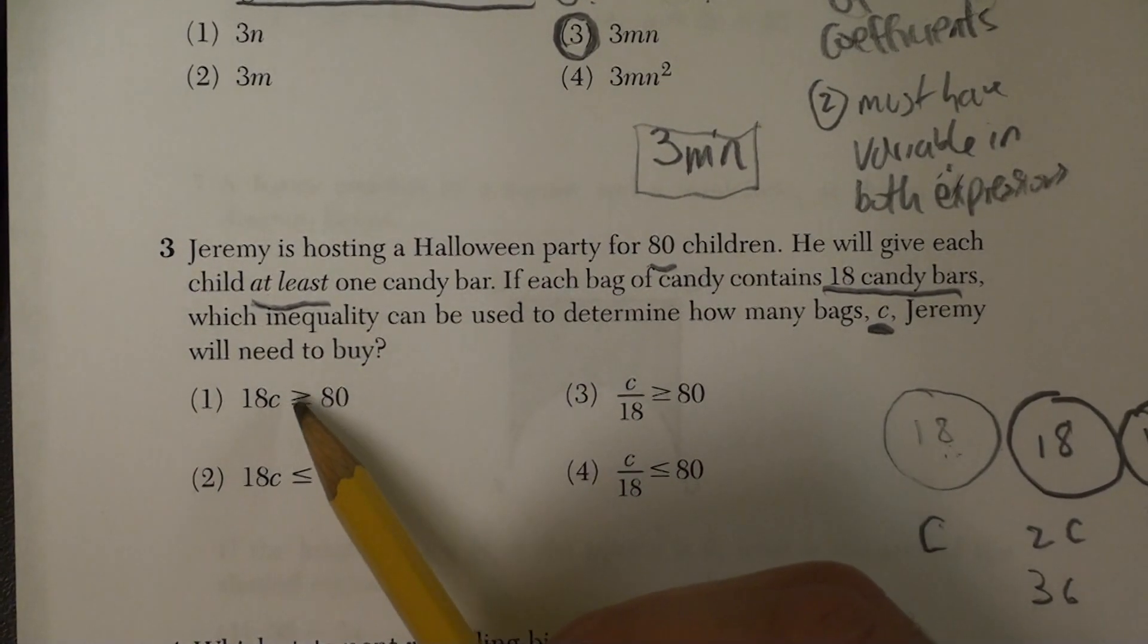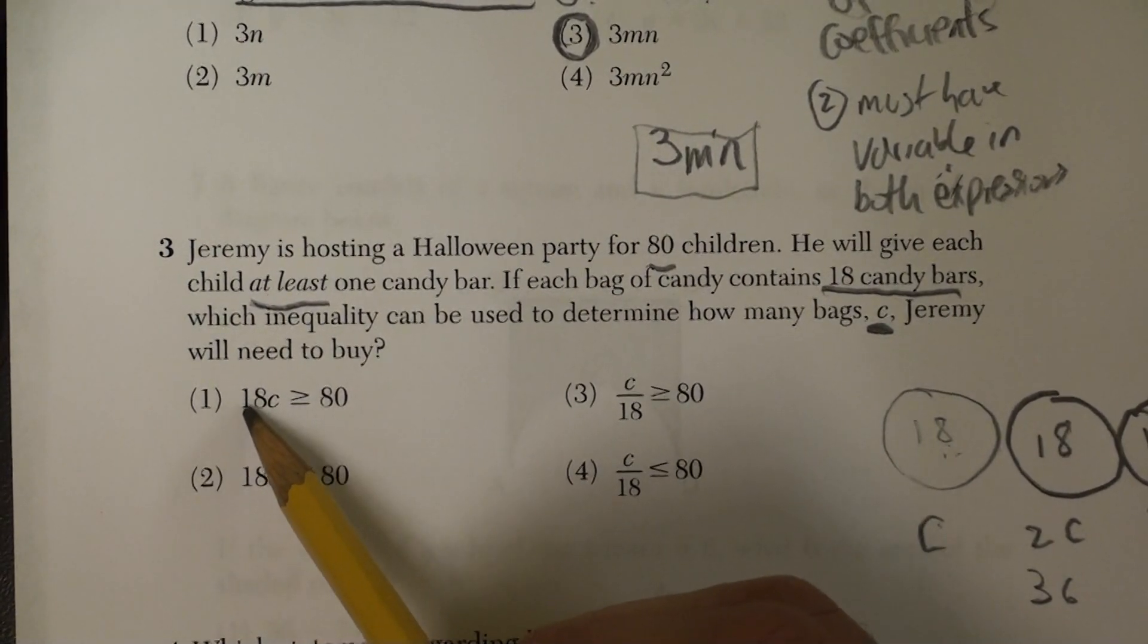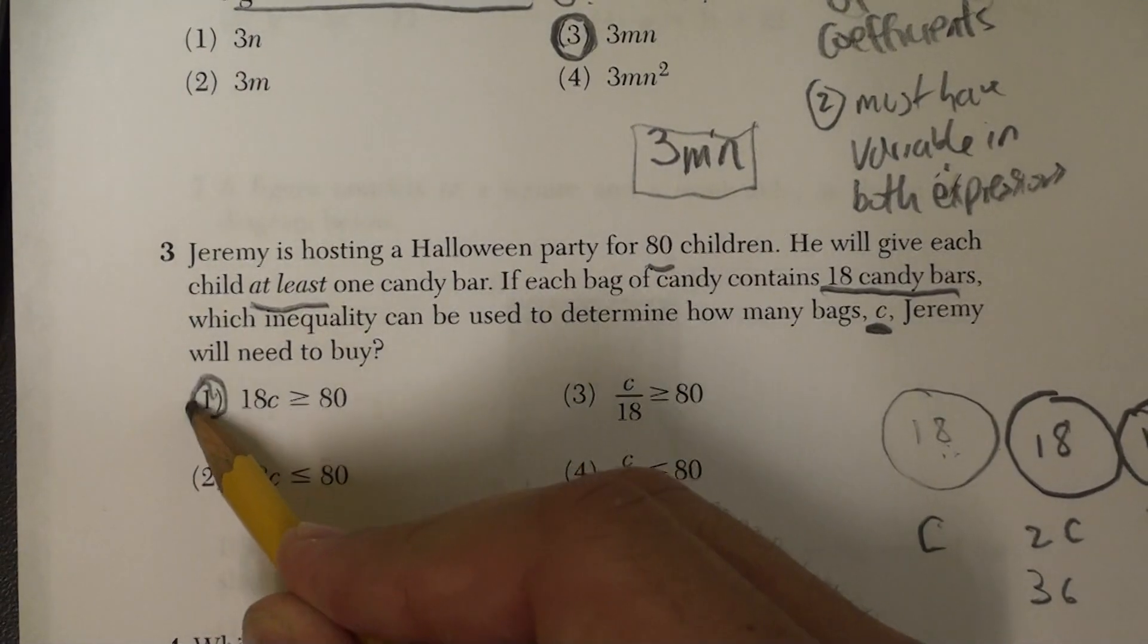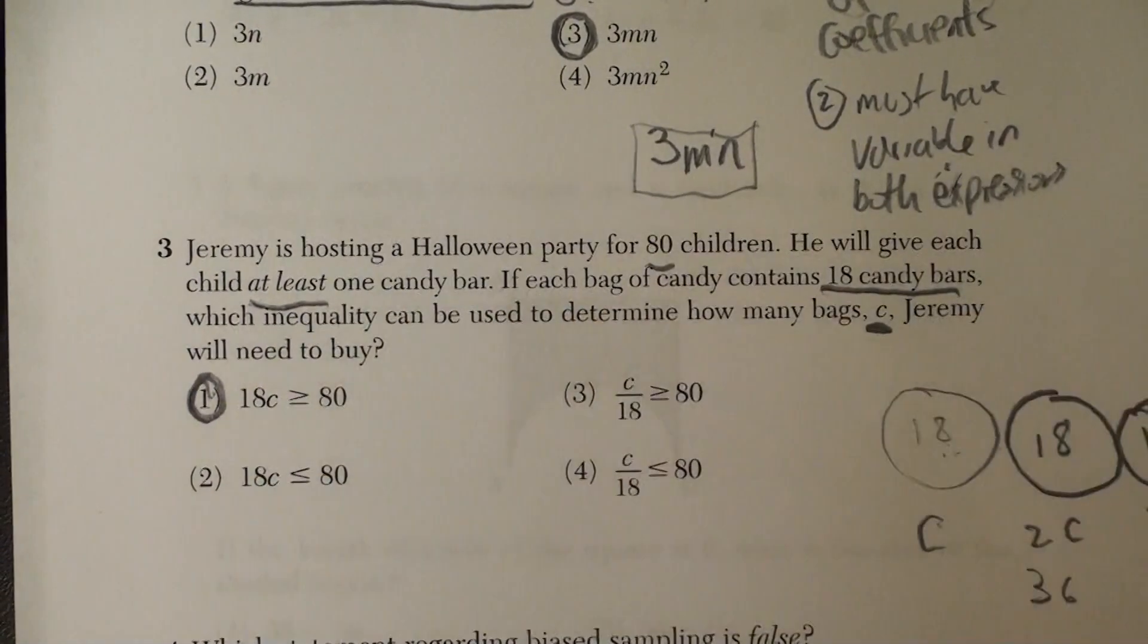We look through our signs. This has the greater than or equal, and it's the 18 candy bars times C. The number of bags has to be greater than 80, so at least one is going to every kid.